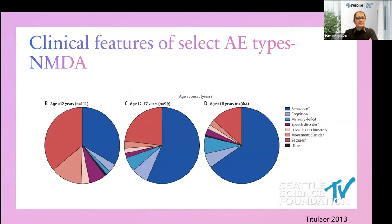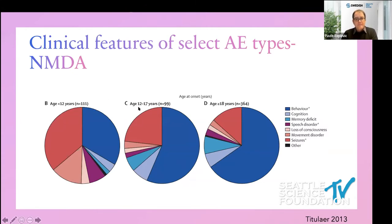The most common presenting features of NMDA receptor autoimmune encephalitis are behavioral change and seizures, but this changes with age. In the youngest patients, seizures are very common, but in those older than 18, behavioral changes are the most common presenting symptom and seizures are relatively less common. Cognitive changes, memory deficits, and speech disorders fill out the remainder of the presentation.